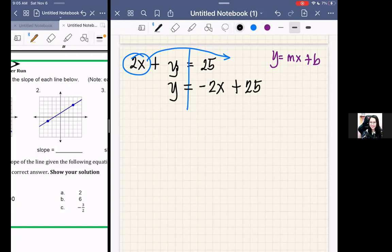Now, when I write this as y equals mx plus b, who is m's counterpart? This - negative 2. Therefore our answer is m equals negative 2. That is its slope.